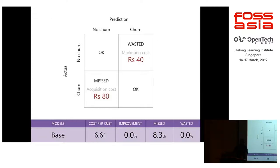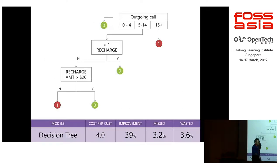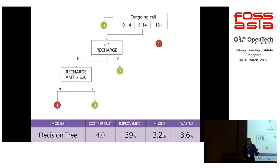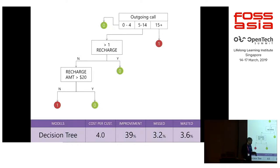The question is, how do you do that? So we started with a simple white box model — a decision tree. What it said was: if the customer has not made an outgoing call for 15 days, they're going to leave. If they have made a call in the last four days, they're fine. If they made a call in the last five to fourteen days, then check if they've made more than one recharge in the last quarter; if not, check if that one recharge was for at least $20 equivalent. Three simple parameters. Based on simulation, this saved them approximately 39% of their total cost.